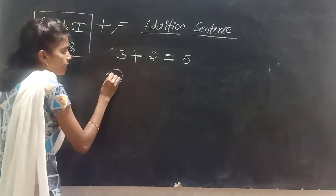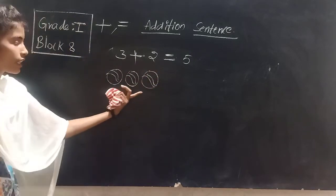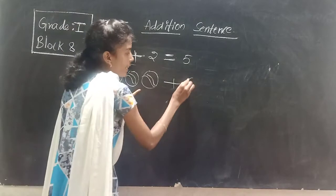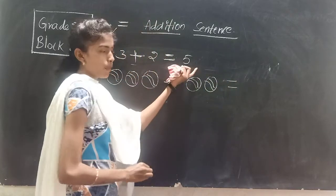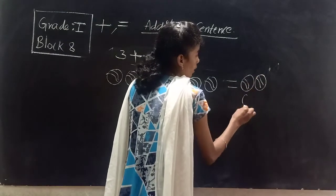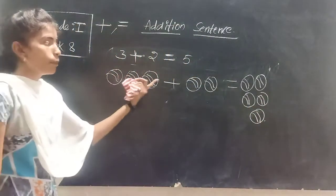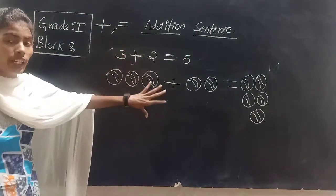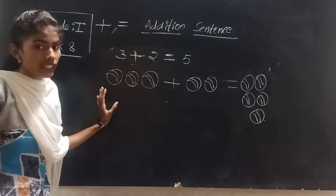So how can we represent? I am taking three balls first — one, two, three. Any pictures we can take. Then plus, and next two more balls, then is equal to. How many balls are there? Five balls. Three plus two is equal to five balls. If you have a number addition sentence, you can draw the pictures. If you have a picture, you can write the addition sentence by counting.